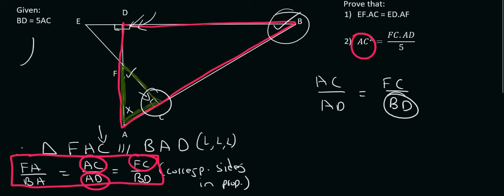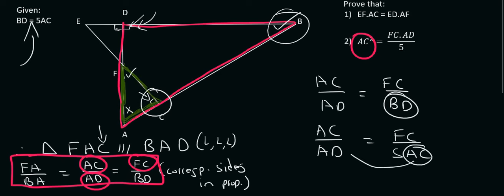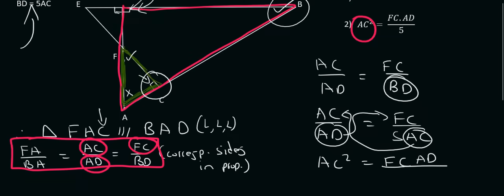BD is the problem, but if you look at what they've given you, they tell you that BD is the same as 5 times AC. So we can say AC over AD is equal to FC over 5 times AC. I'm then going to multiply this AC up to the top, giving us AC squared. And then multiplying AD up gives us AC squared equals FC times AD over 5. So it all comes down to similarity or proportionality — if you get stuck, it's usually something given in the original question.